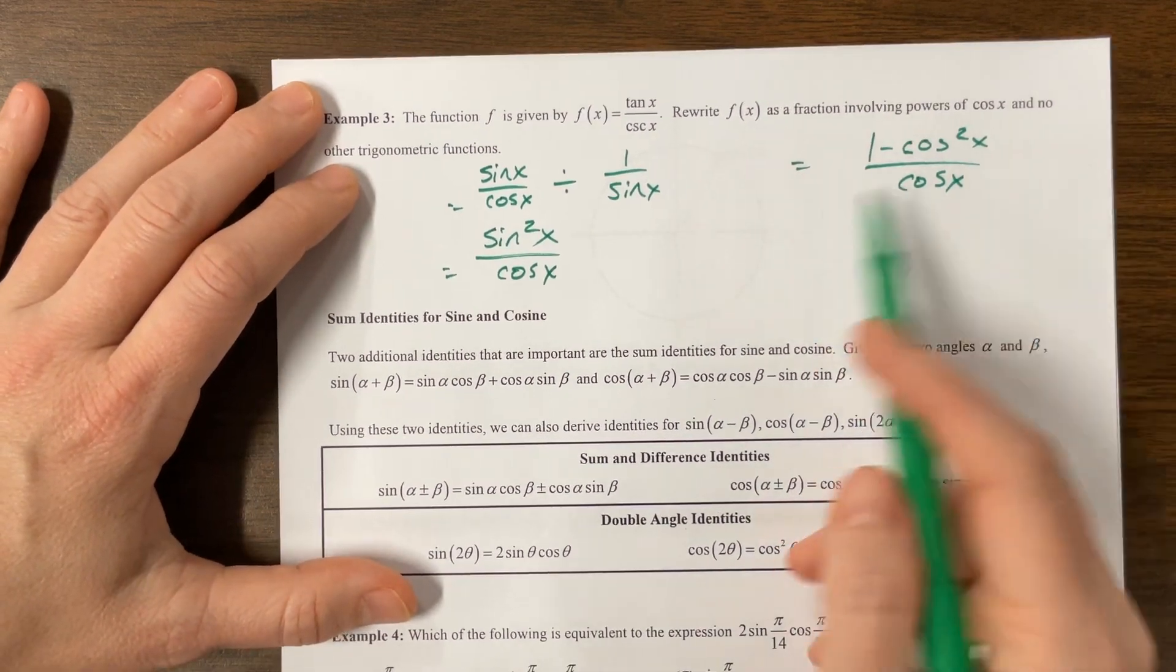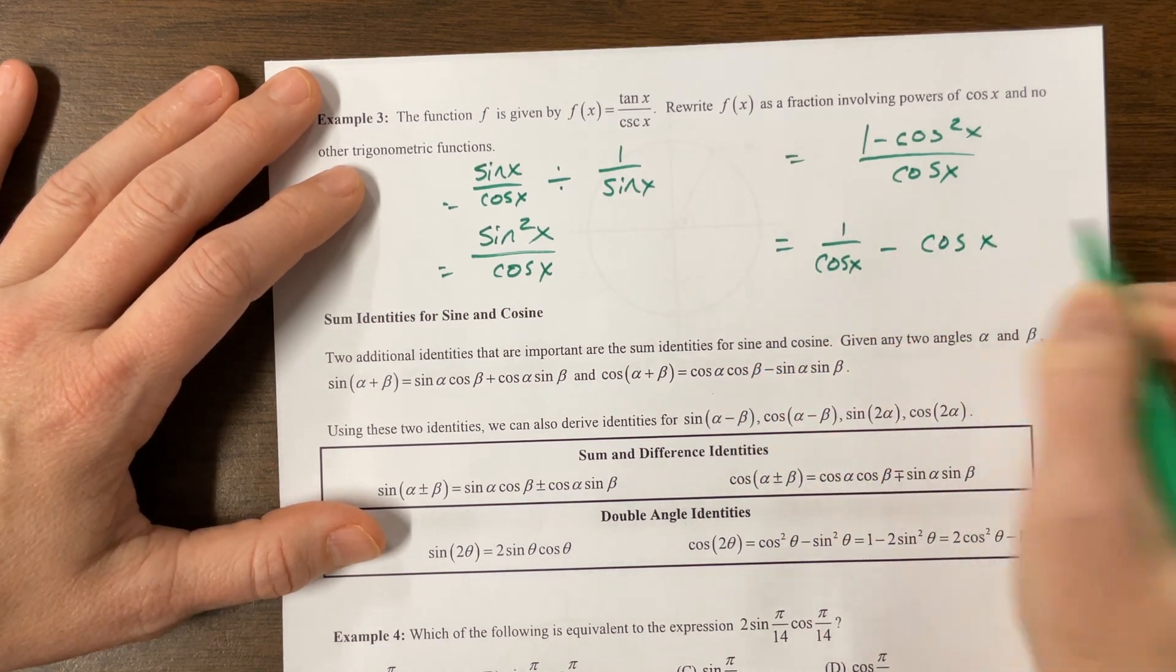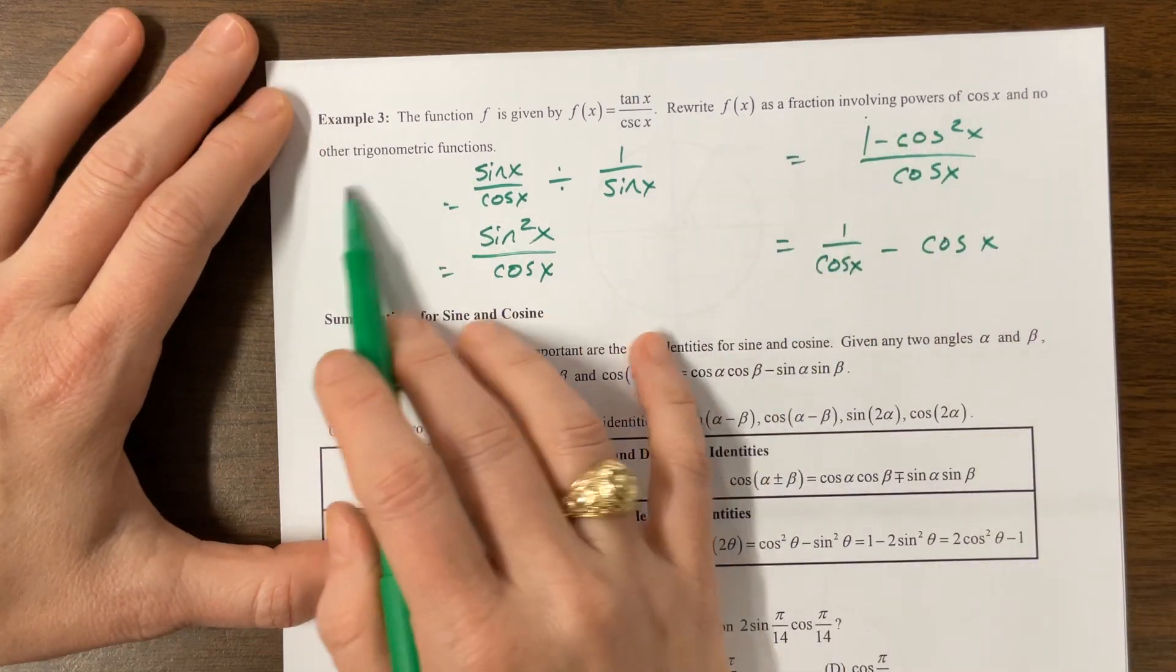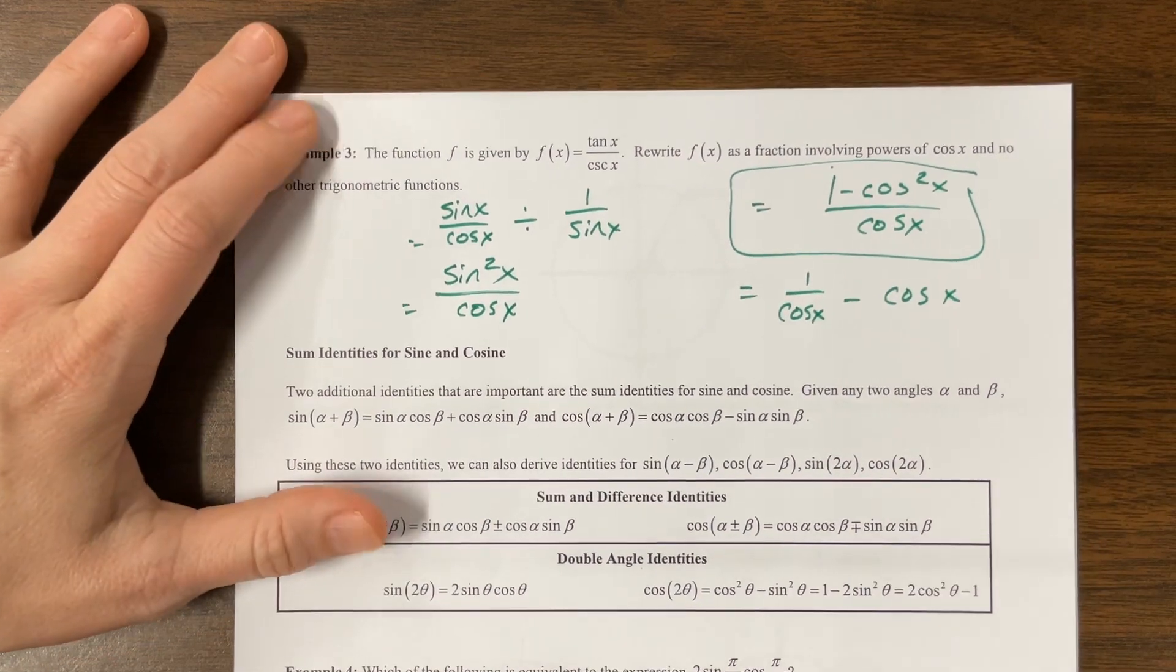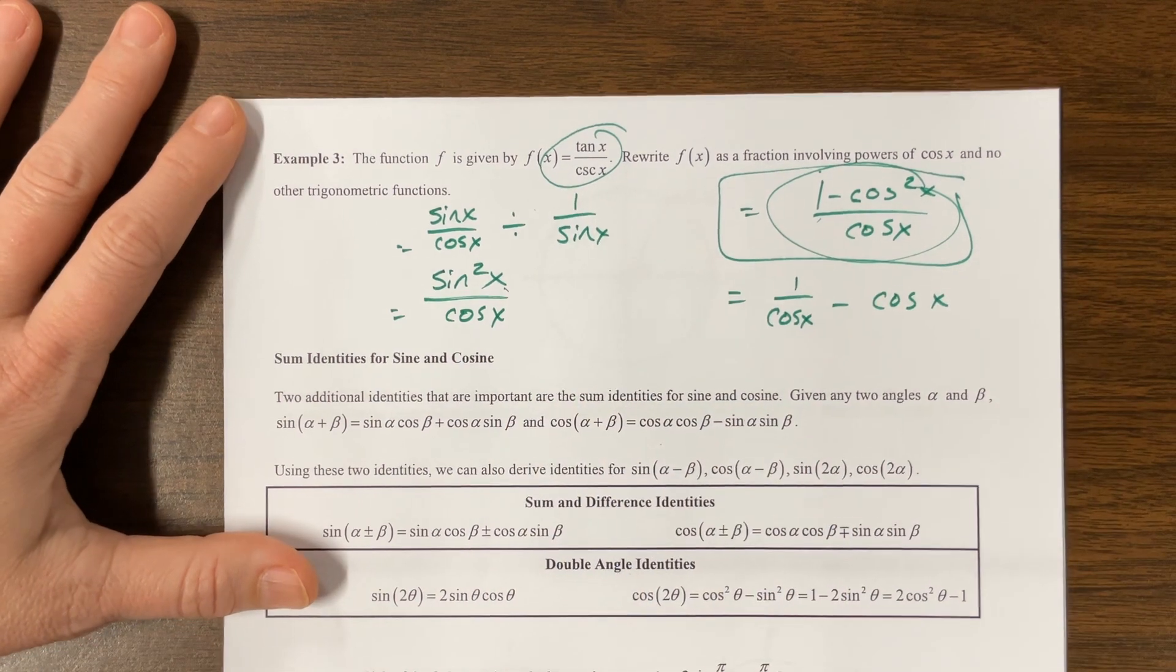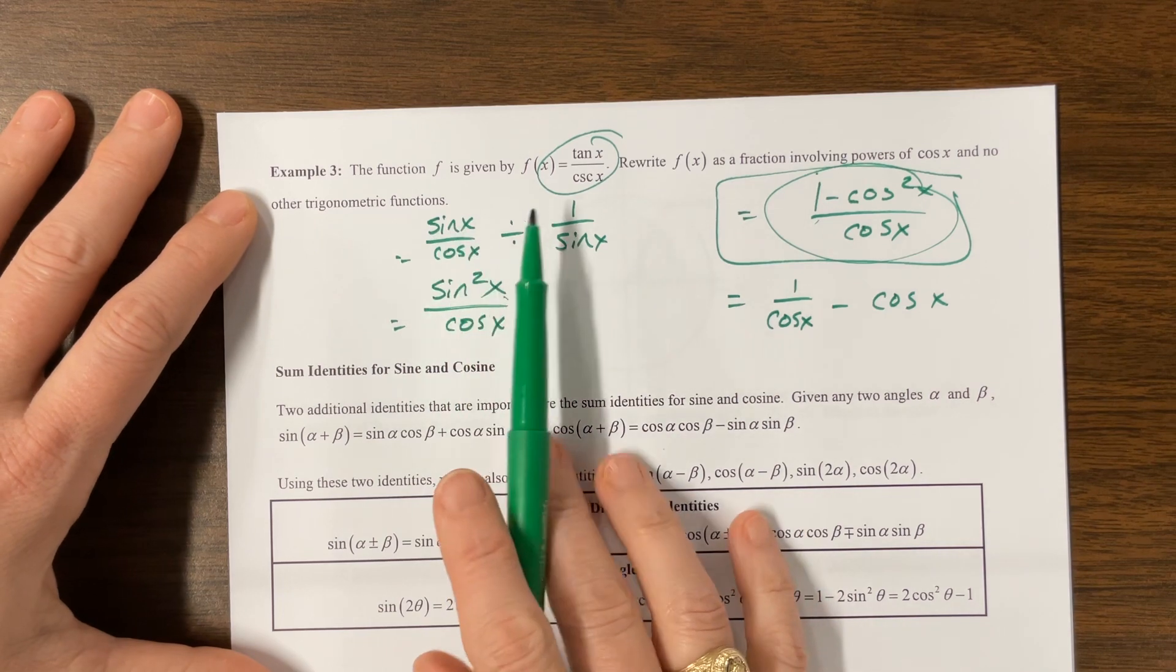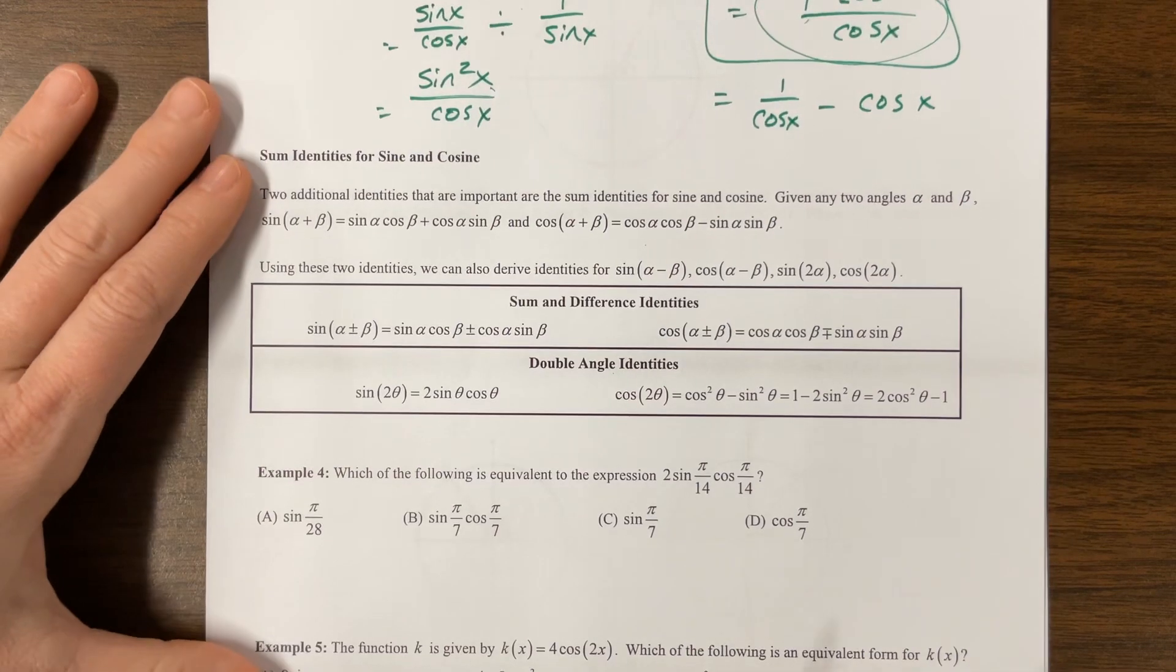And we could split this into two different fractions if we wanted to. One over cosine x minus cosine x. Rewrite f of x as a fraction involving powers of cosine and no other trig functions. I think this is the answer they're looking for. This is where I like for identities to be proved that this equals this or something like that, so that you have to show me the steps on how you got there, but you know where I want you to end up. But I think the way he wrote this question is probably how AP is going to write it. I think free response, FRQ 4 maybe, might look like that.